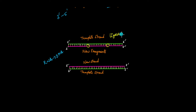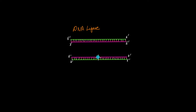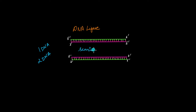At the end of the replication process, after DNA ligase has stitched the Okazaki fragments together, you have two new molecules of DNA. We started with one double helix and end up with two double helices. This is the semi-conservative model of DNA replication.